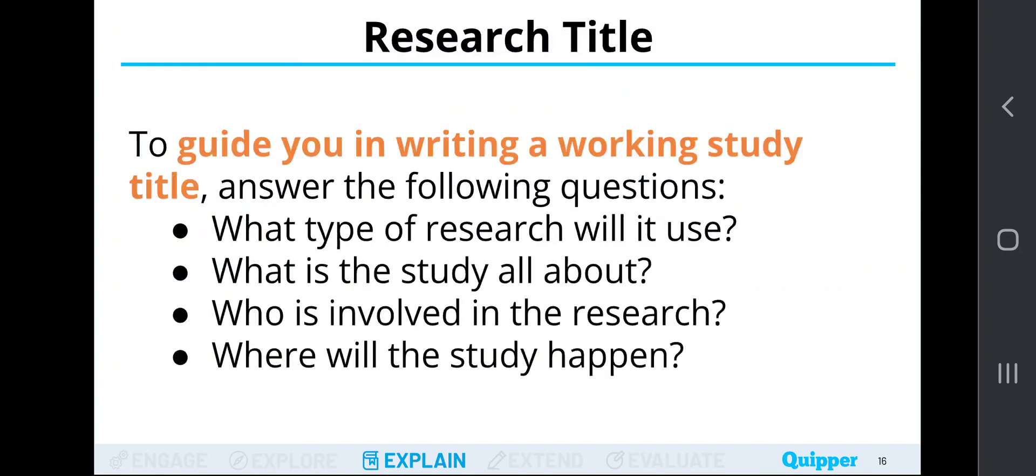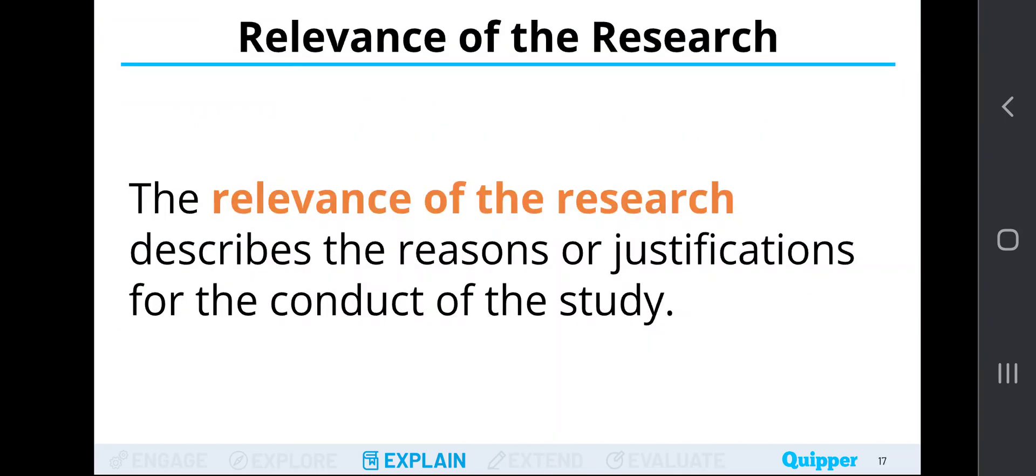To guide you in writing a working study title, always remember that it must answer the following questions. Number one. What type of research will it use? What is the study all about? Who is involved in the research? And where will the study happen? Now, in doing so, we need to remember that the relevance of the research describes the reasons or justifications for the conduct of the study. Your research study must be relevant in order for it to be justified as you conduct the particular study.